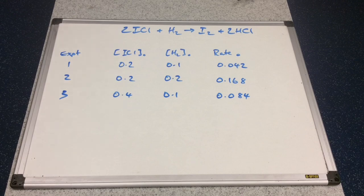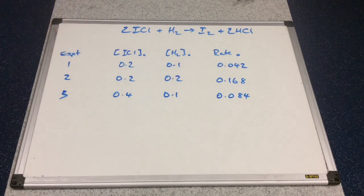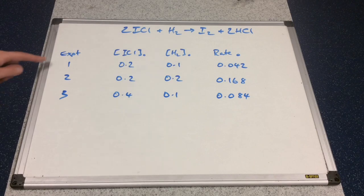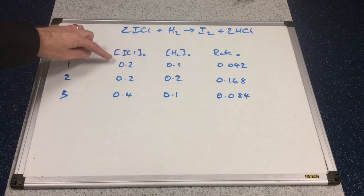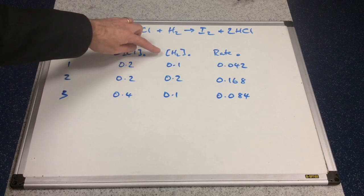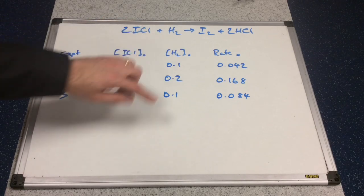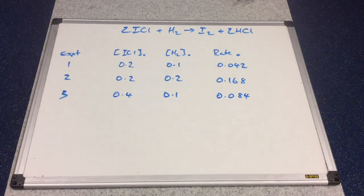We'll start with this example. I've got the reaction equation up here — two moles of ICl reacting with one mole of hydrogen to make one mole of I₂ and two moles of HCl. Three experiments were carried out with these initial concentrations of ICl, these initial concentrations of hydrogen, and the initial rates measured are these values here.